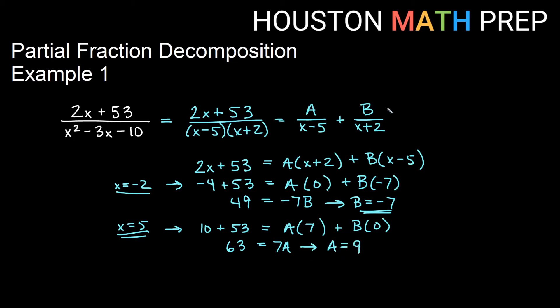And if we plug those into our original setup of how we were going to get our partial fraction decomposition, we will get 9 over x minus 5 minus 7, because B was negative 7, over x plus 2.